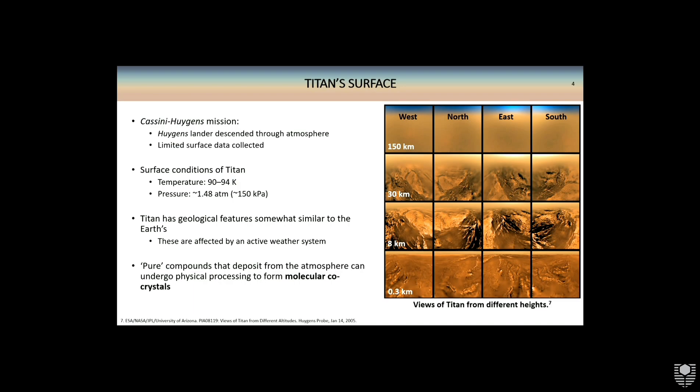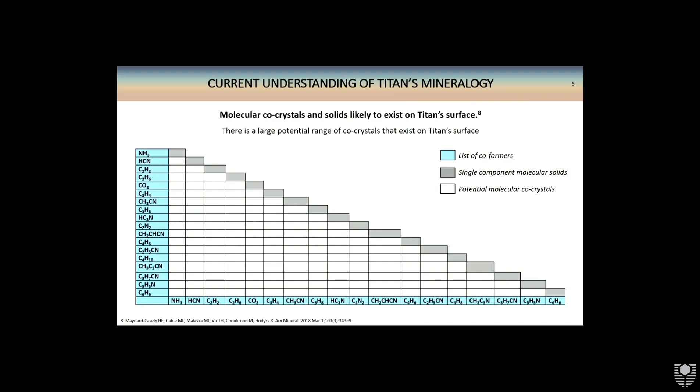What we know about Titan's surface comes largely from the Cassini-Huygens mission that NASA sent out about 20 years ago now. This was the Cassini satellite which orbited around Saturn and Titan, and the Huygens lander probe that descended through the atmosphere. Unfortunately, Huygens was mostly designed to collect atmospheric data, so it couldn't really collect all that much surface data. What we do know, however, is that the average surface temperature of Titan is around 90 to 94 Kelvin, and the pressure is about one and a half times that of Earth at sea level. These conditions mean that the molecules generated up in the atmosphere, which consist of nitrogen, carbon, and hydrogen containing organic molecules, exist as stable condensed phases on the surface.